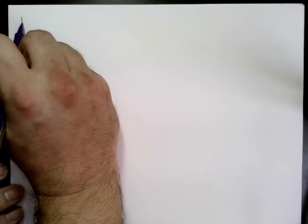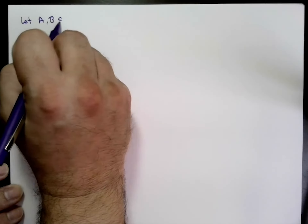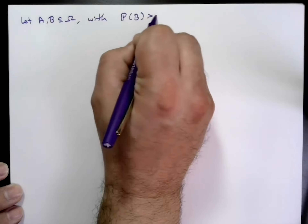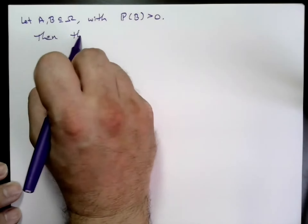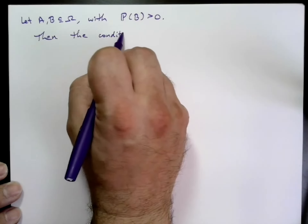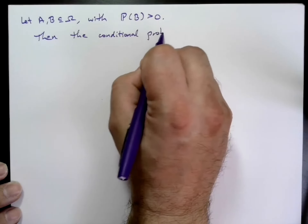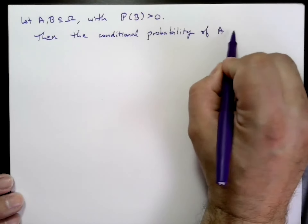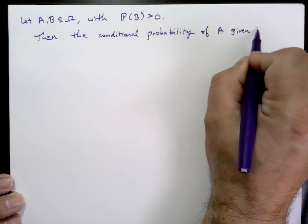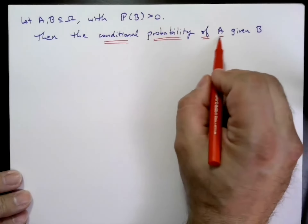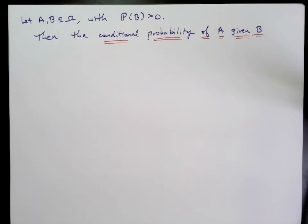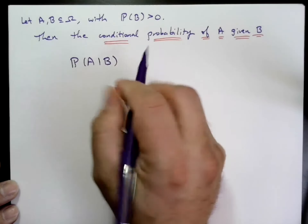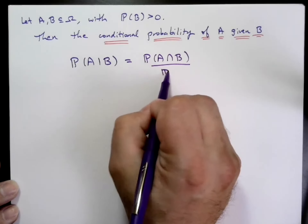Now we're ready to define conditional probability. Let's take any two events, A and B, under the assumption that the probability of B is positive. The conditional probability of A given B is defined as follows: the probability of A given B is equal to the probability of A intersect B divided by the probability of B.